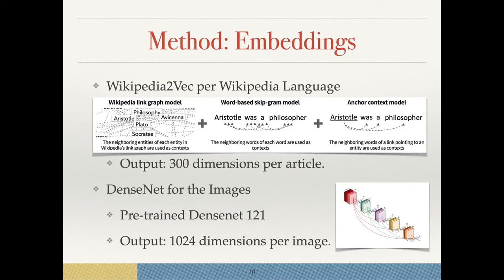The different languages are embedded with standard embedding tools. First, Wikipedia to Vec, which uses a link graph model. The traditional skip-gram model and anchor context model combined gives us 300 dimensions per language. And finally, we have DenseNet, a well-known embedding for images where we use the pre-trained DenseNet 121, which results in 1024 dimensions per image.